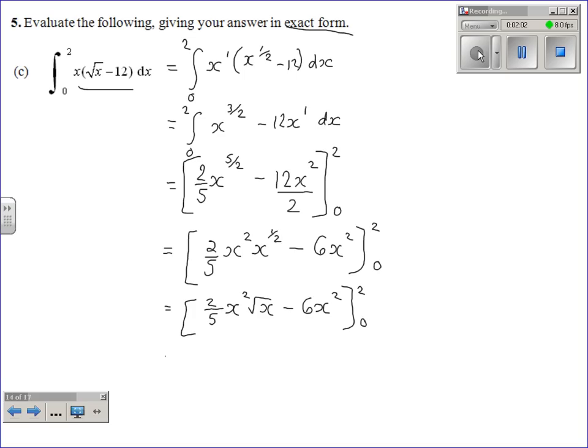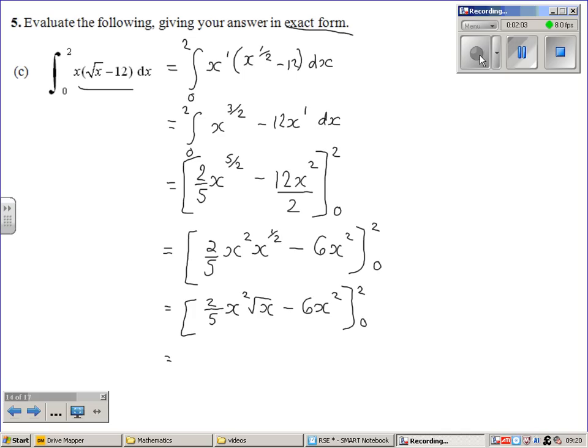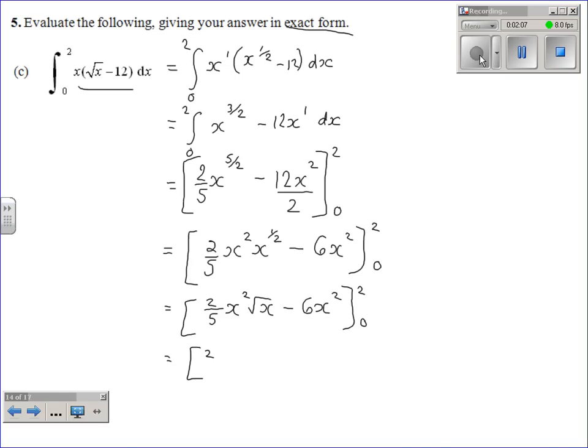We're ready to substitute in now. If we substitute the 2 in first, we've got 2 fifths times 2 squared. 2 squared is 4, times root x, so the square root of 2, which is root 2, minus, remember here you're doing the squared first, so 2 squared is 4, and 4 times 6 is 24.